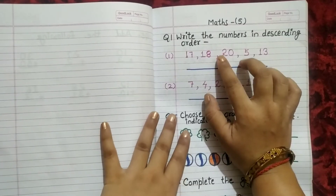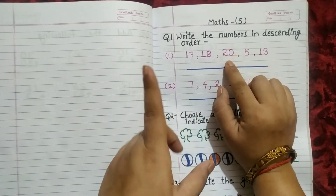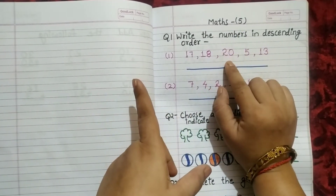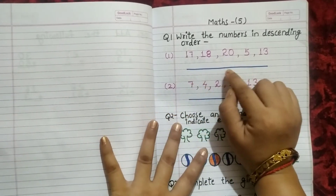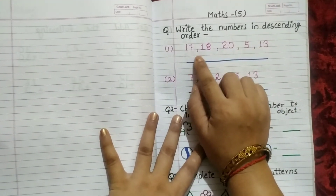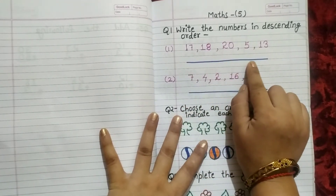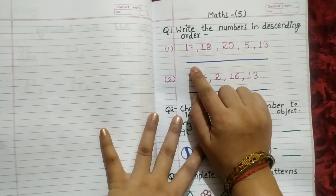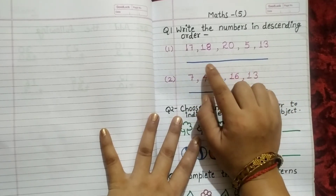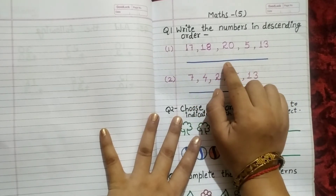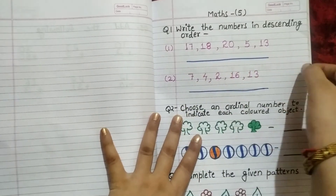This is my last question paper. Question number 1: Write the numbers in descending order. You can give it in ladder form like the ascending order question if you want, or write the numbers in a row with the answer below. Descending order goes from bigger to smaller — the biggest number comes first, then progressively smaller numbers until the smallest.